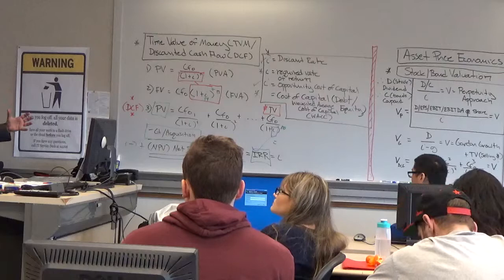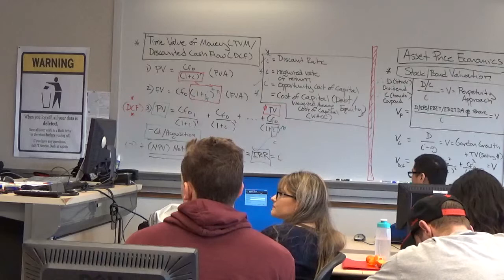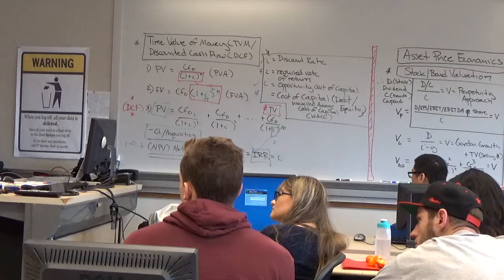To get to the discounted cash flow as quickly as possible, get to the present values, the net present values, internal rates of return calculations as soon as possible, and then memorize that. And I will grind you on that.